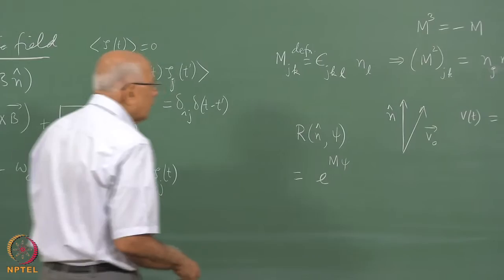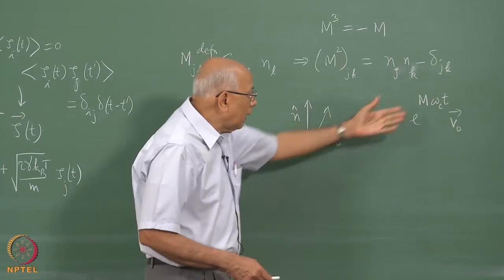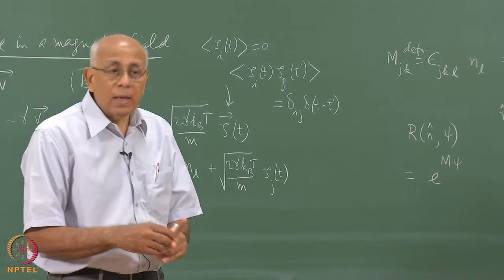Expanding exp(M·omega_c·t), using M³ = -M, one gets a piece that does not change, a piece along n, and a piece along v_0 cross n. So v(t) in this deterministic setting describes precession. For a Brownian particle in a fluid, the average velocity becomes e^(-gamma·t)·exp(M·omega_c·t)·v_0 — meaning the mean velocity spirals in and decays exponentially.